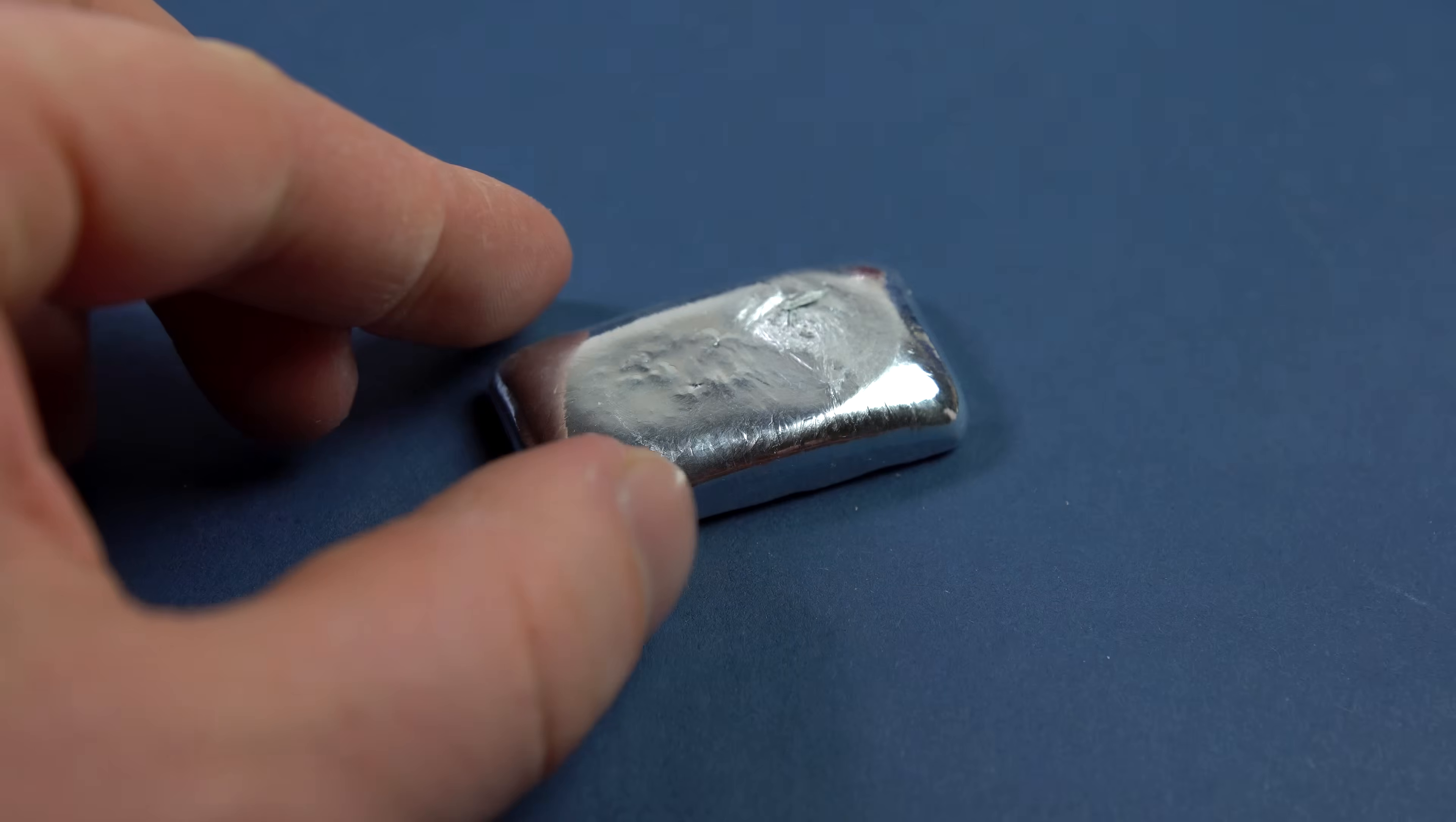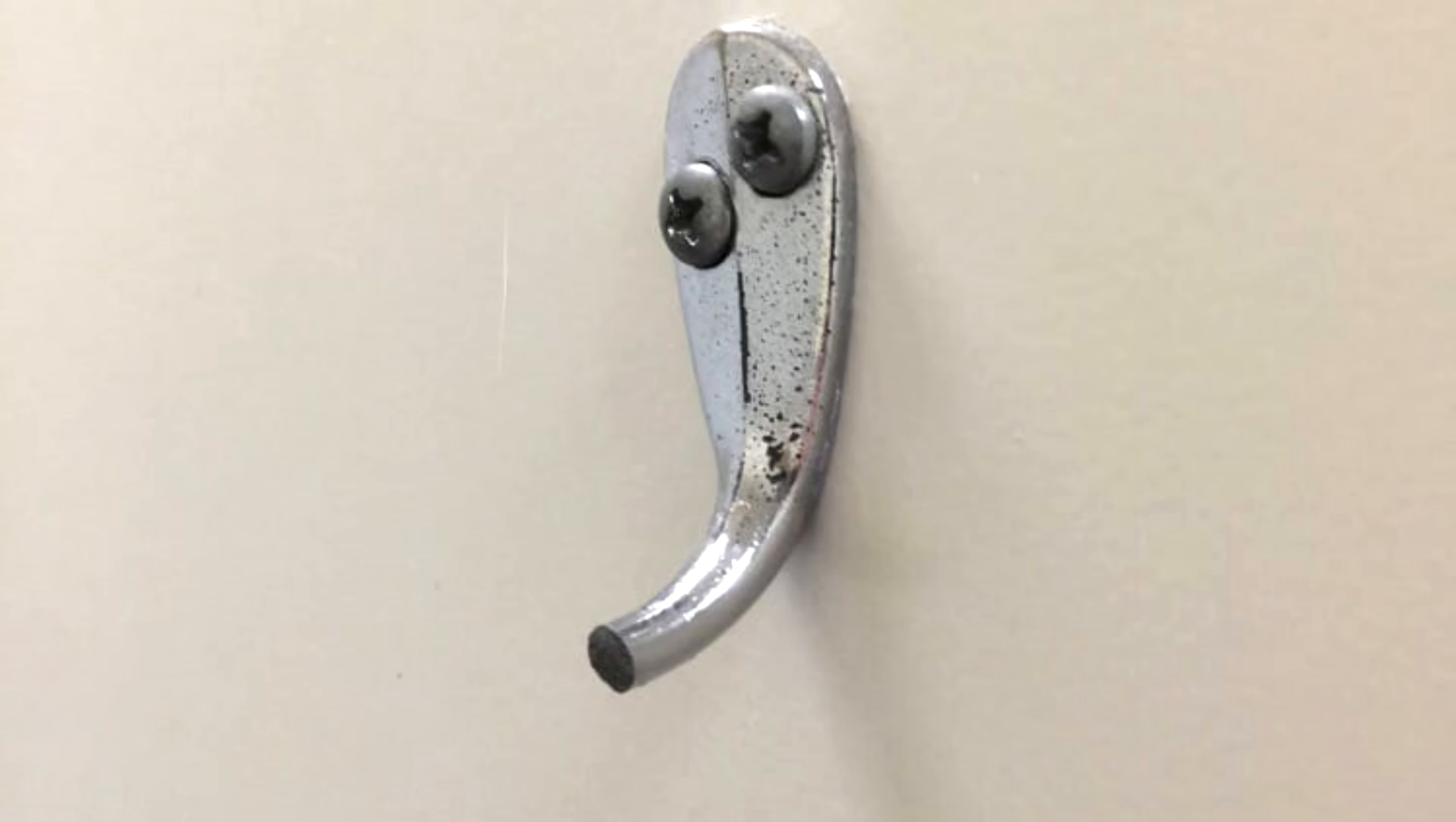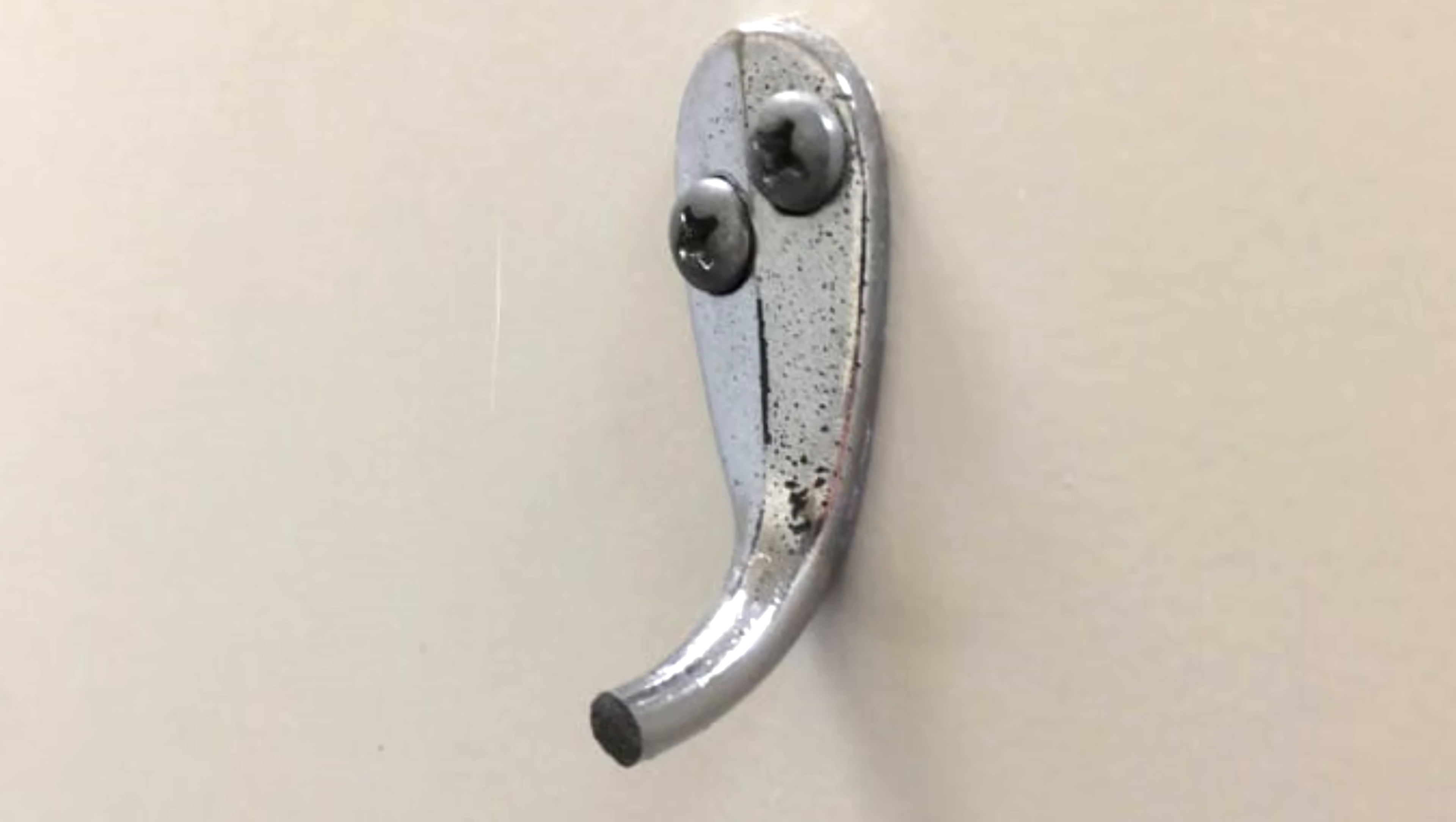However, items made from zinc have a disadvantage, which is their fragility. For instance, zinc hangers easily break down because of the poor viscosity of the metal.